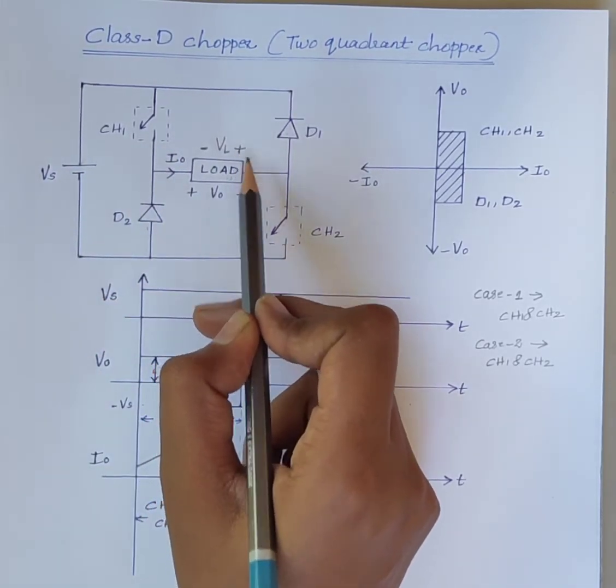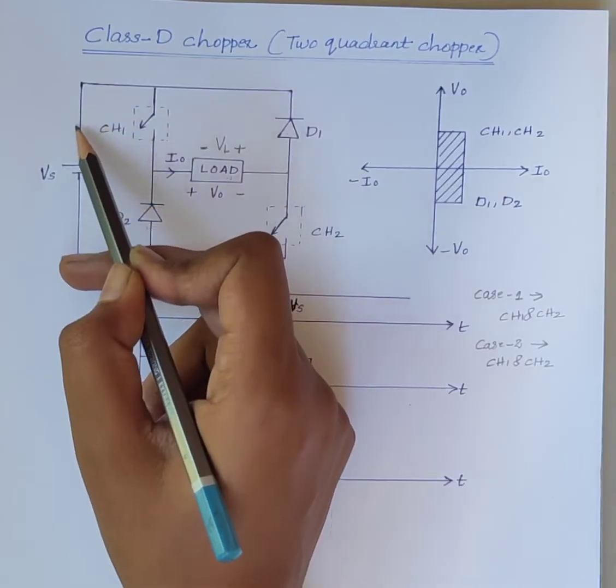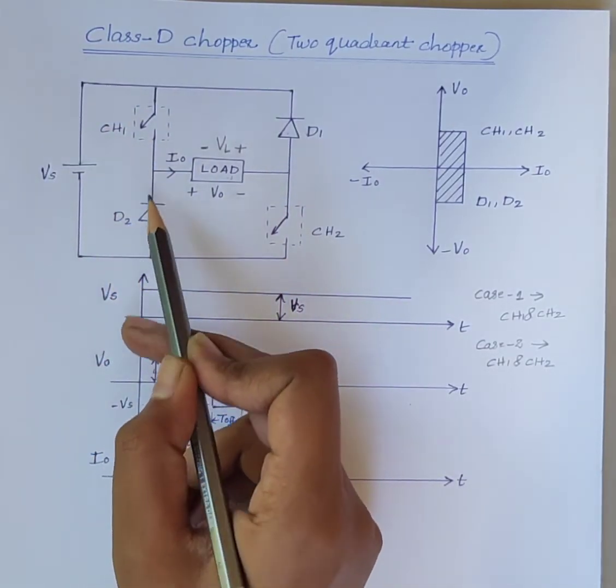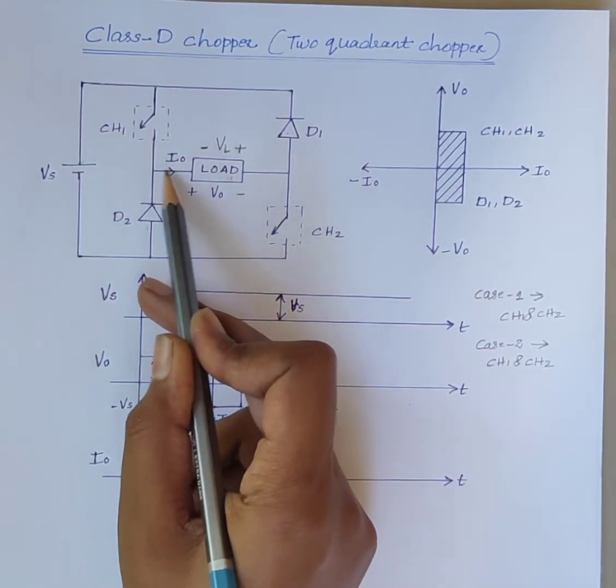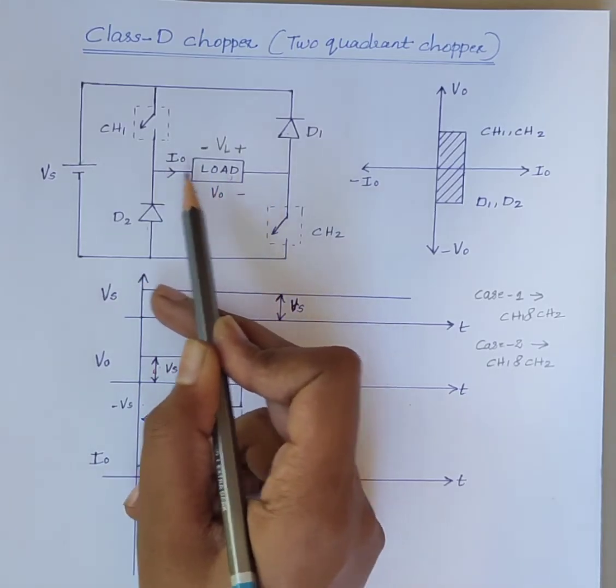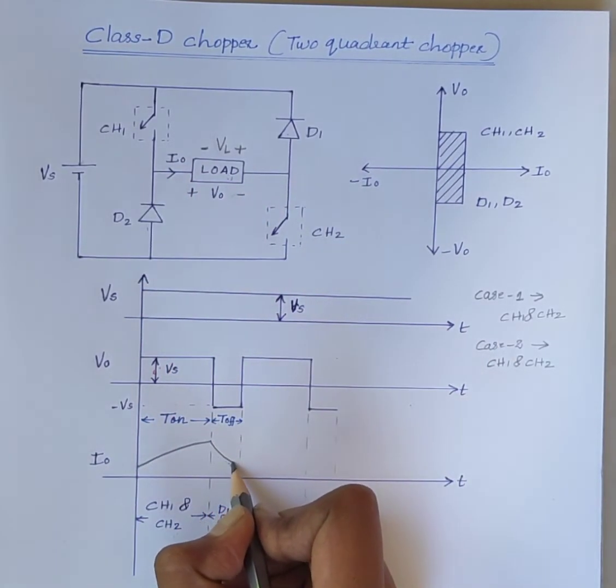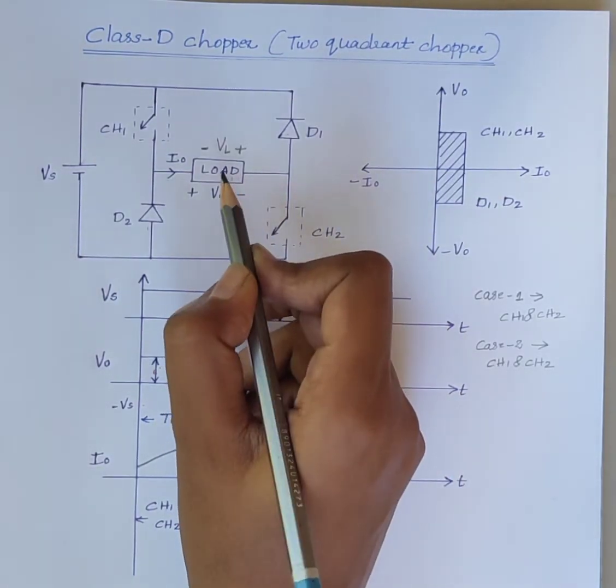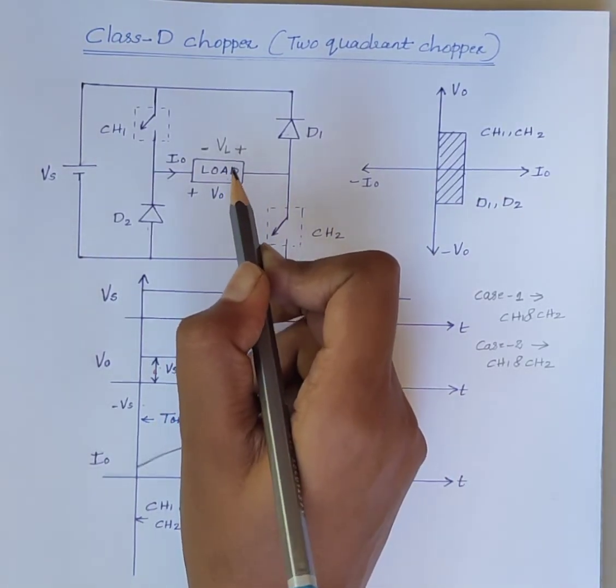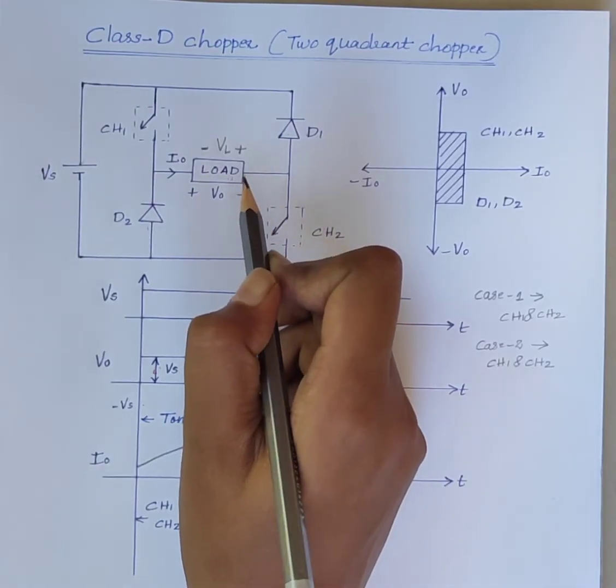Current flows from positive VL through the source, D2, back to the load. Current direction is positive and it decreases gradually because the energy stored in the inductor is released during this time.